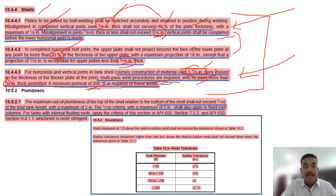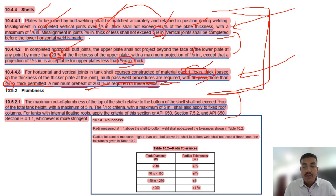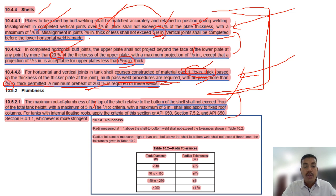One question will definitely come from shell plumbness. If you remember from API 650, the ratio is 1:200, and in API 653 it is also 1:200 — easy to remember. The maximum out-of-plumbness of the top of the shell relative to the bottom shall not exceed 1/200 of the tank height, with a maximum of 5 inches. The 1:200 criterion with a maximum of 5 inches also applies to fixed columns for tanks with internal floating roofs.